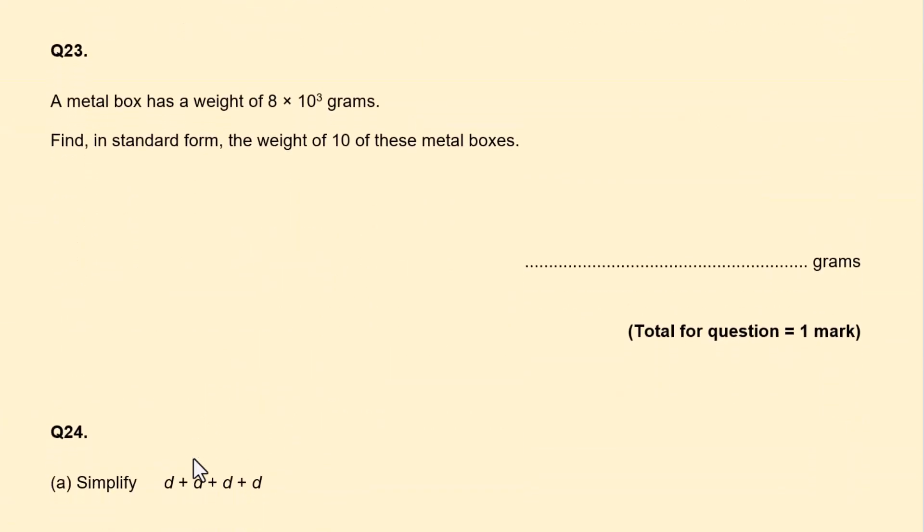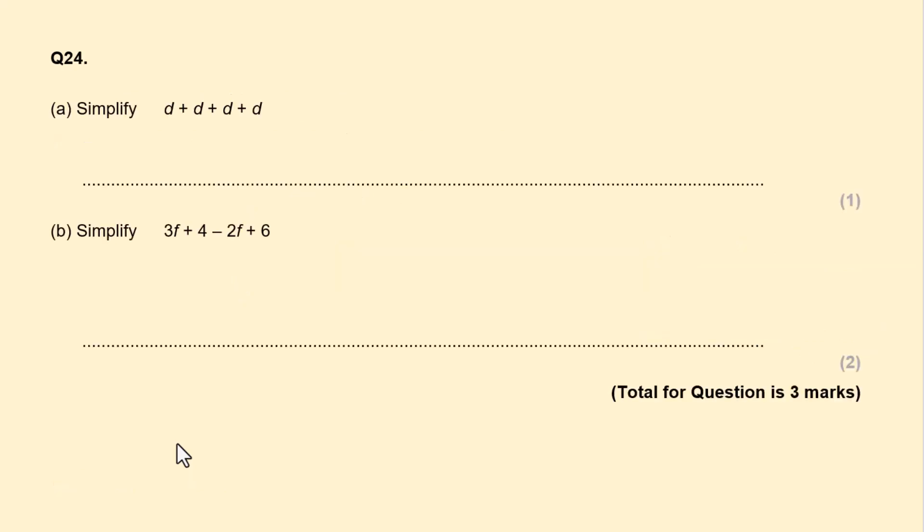Number 23. A metal box has a weight of 8 times 10 to the power of 3 grams. Find in standard form the weight of 10 of these metal boxes. So 1 of them is 8 times 10 to the power of 3. So we're going to times by 10, 10 of them. So 10 does have a power of 1 here. So we're going to do 8 times 10 to the power of 4. And just double check, this is standard form. Is it between 1 and 10? Yes. So we're going to do 8 times 10 to the power of 4. 1 mark. These are more of a foundation question.